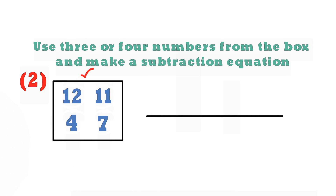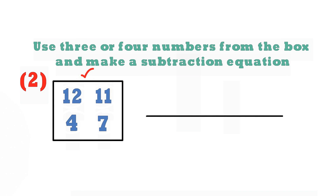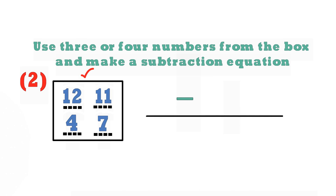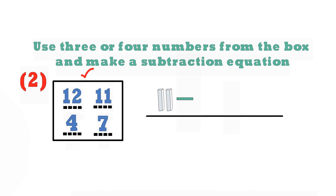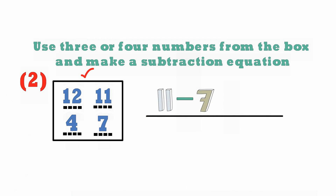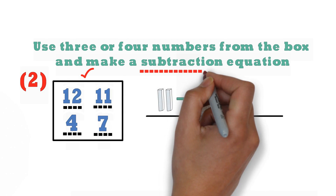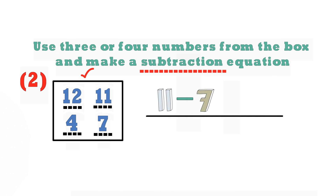So over here, what we need to do is make sure to use these numbers. Since we're supposed to be making a subtraction equation, I'm going to take 11 take away 7. Now they're telling us to use 3 numbers to make a subtraction equation, so we could take 11 take away 7, and then we could get the number 4.